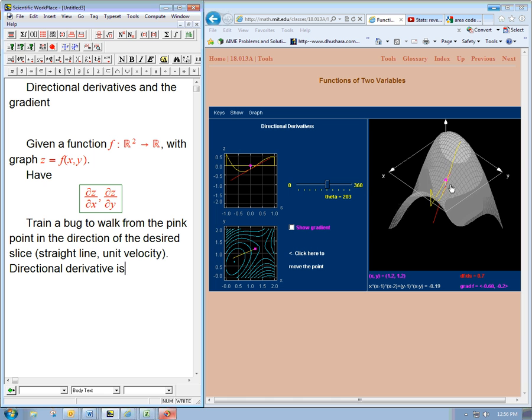Here I'm thinking of it as a temperature, we can think of it as a height of a landscape as well. We let the bug be here on the landscape. We say go in this direction and tell me how fast your height is changing. Or if the function is temperature, or whatever the function is, we ask the bug, how fast is that output of that function changing?